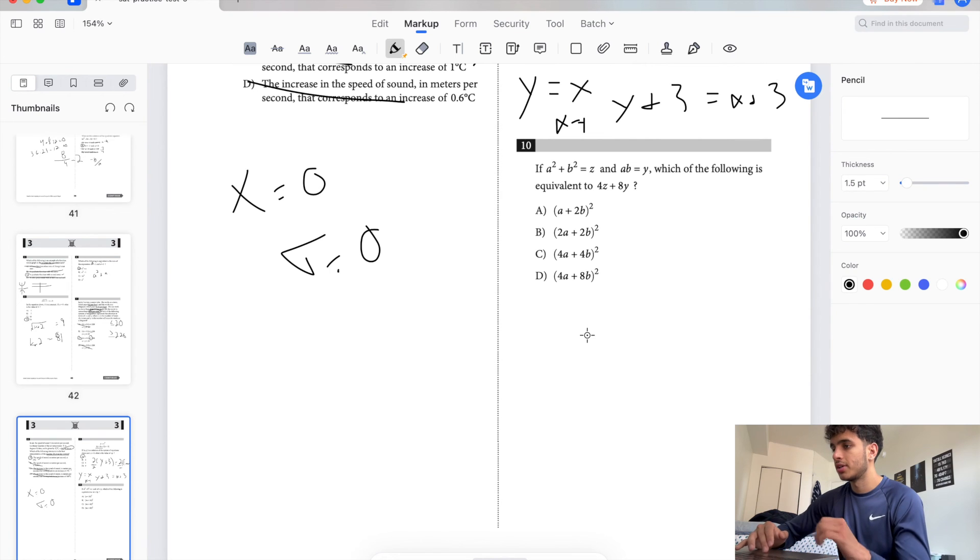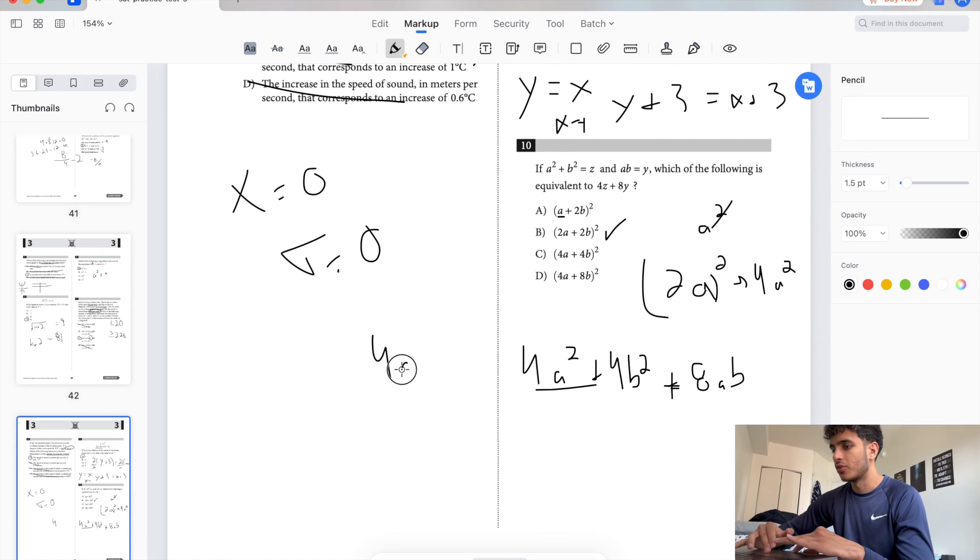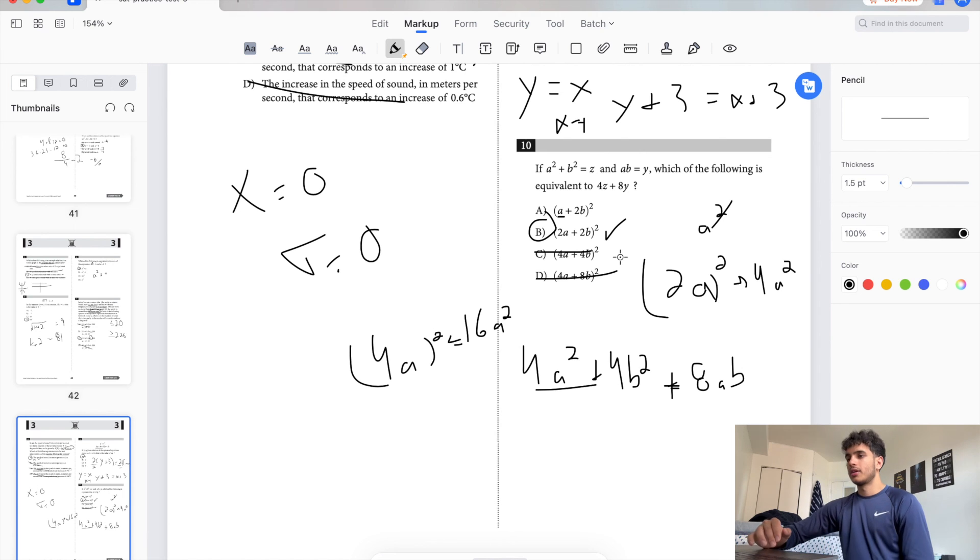If a squared plus b squared equals z, and ab equals y, which of the following equals 4z plus 8y? Now you just plug it in, pretty simple stuff. So we got 4a squared plus 4b squared plus 8ab. So first, this is a squared, so that's wrong. We need 4a squared. So when I say first, I mean like first in FOIL, like first, outer, inner, last. So this is 4a squared. This works so far. 4a times 4a, so 4a squared is equal to 16a squared. So C is wrong and so is D. So B is the answer. Pretty straightforward.